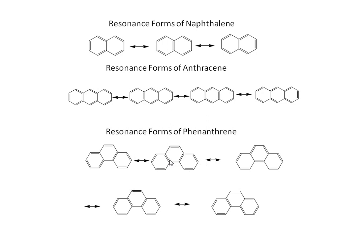When double bonds shift within phenanthrene, the middle ring has three double bonds and the remaining two rings have alternating double bonds. If the middle ring has only two double bonds, another resonance form arises. By systematically shifting double bonds, another resonance structure emerges, giving five total resonance forms of phenanthrene.